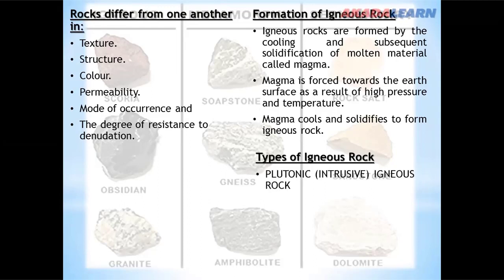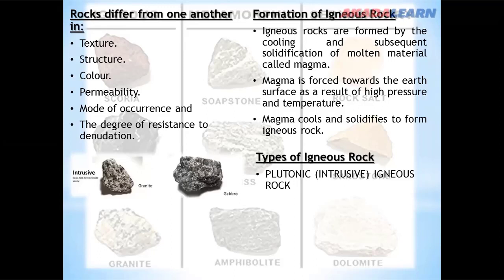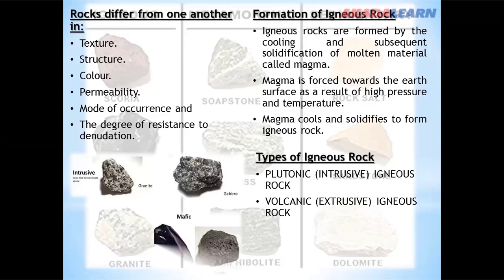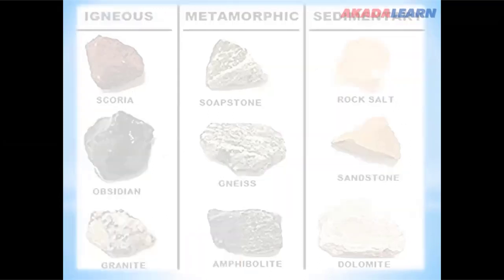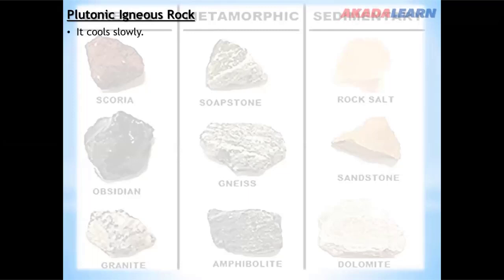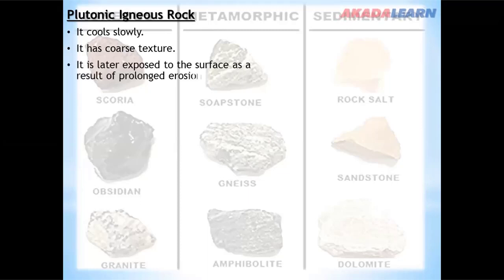Types of igneous rocks: we have the plutonic or intrusive igneous rock, and the volcanic or extrusive igneous rock. Characteristics of the plutonic igneous rock: it cools slowly, it has coarse texture, it is later exposed to the surface as a result of prolonged erosion. Examples include granite, diorite, and gabbro.